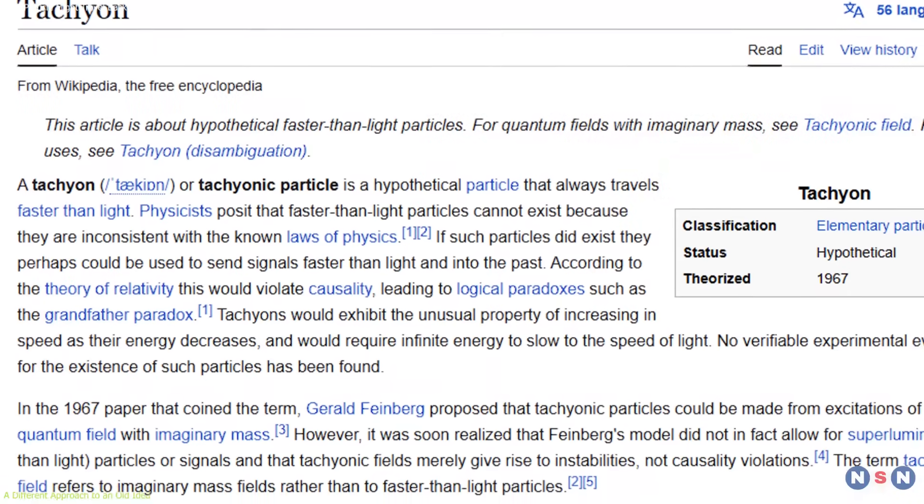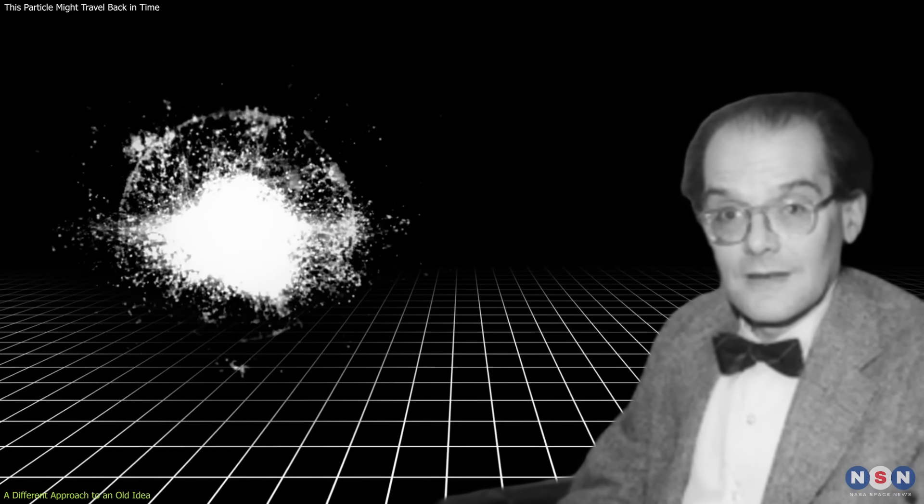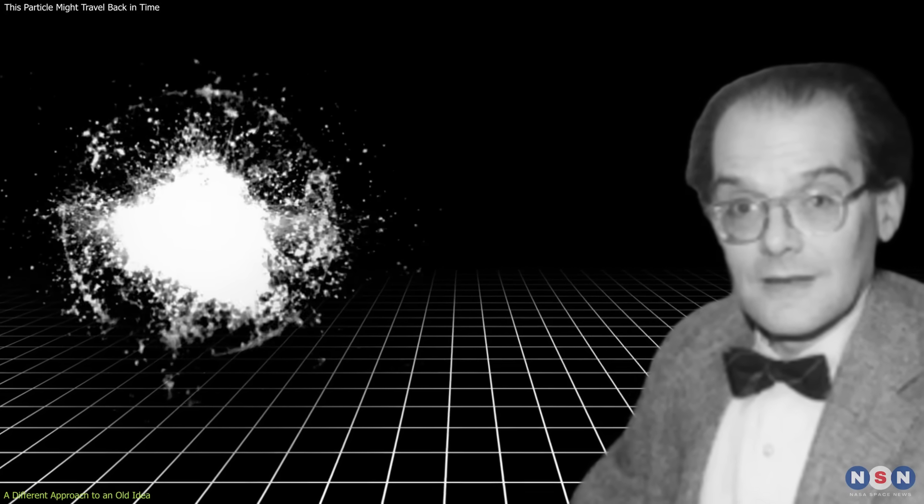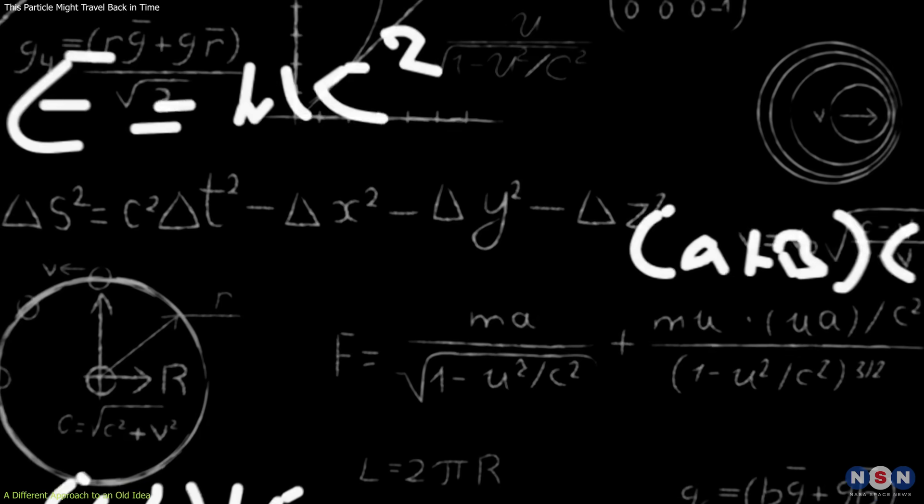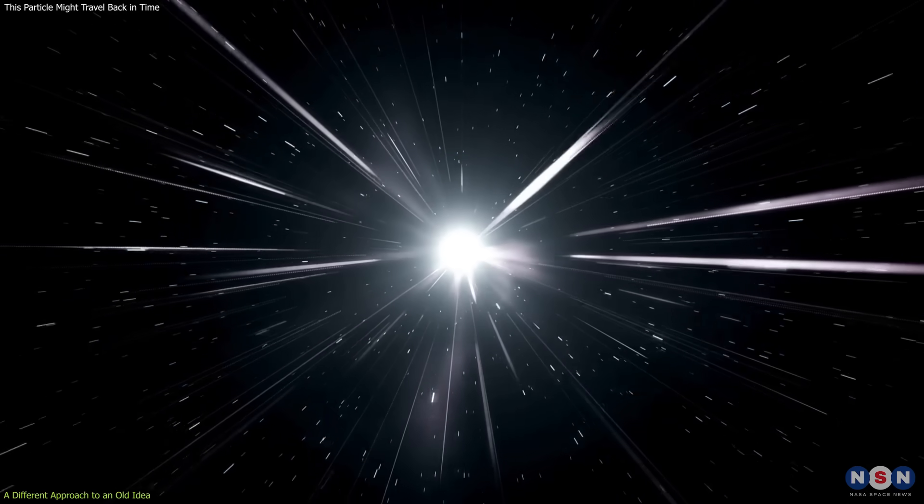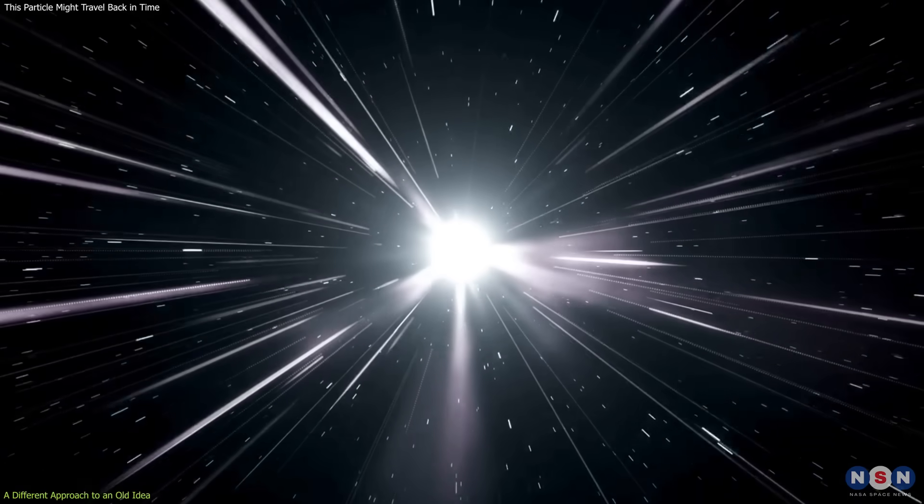Tachyons have been around in theory since 1962, when physicist Gerald Feinberg proposed the idea of particles with imaginary mass, a value derived from taking the square root of a negative number. The implication was radical. If such particles existed, they would always travel faster than light.